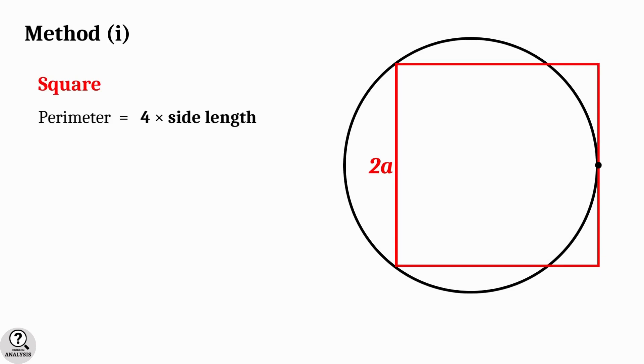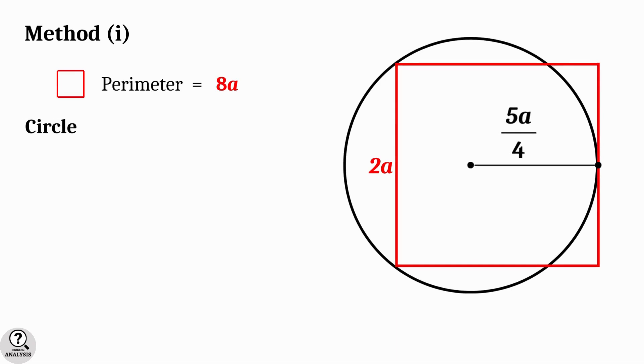Then what will be the corresponding perimeters? For the square, perimeter is 4 times the side length, which is equal to 4 into 2a equal to 8a units. That is, perimeter of square is 8a.